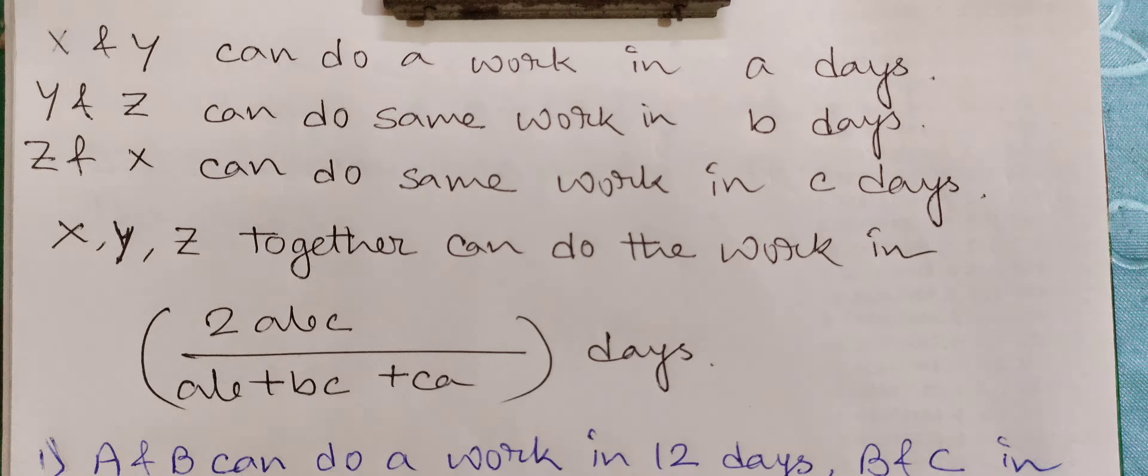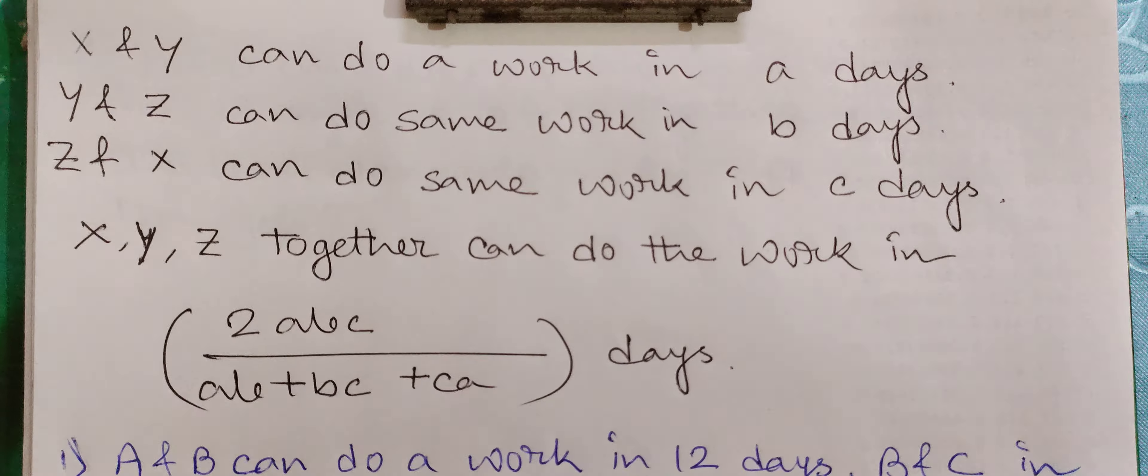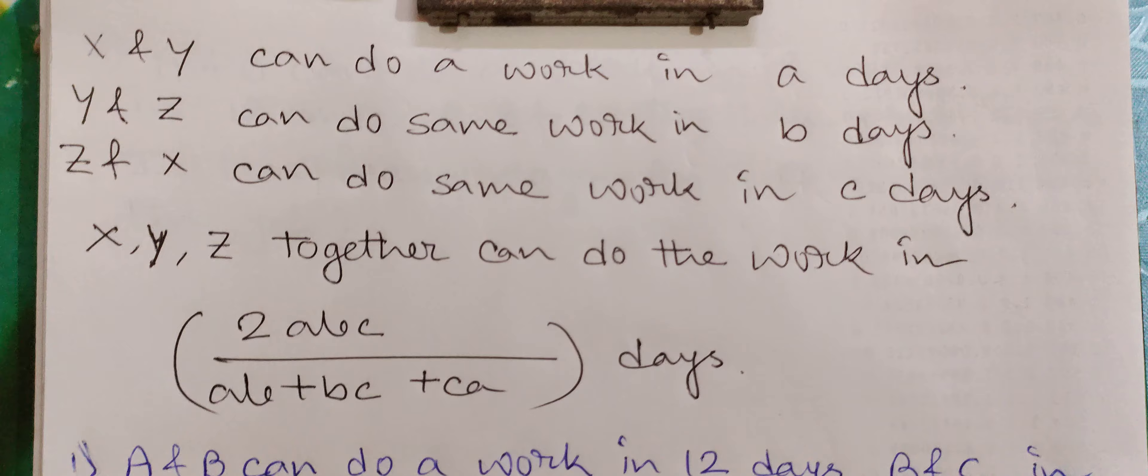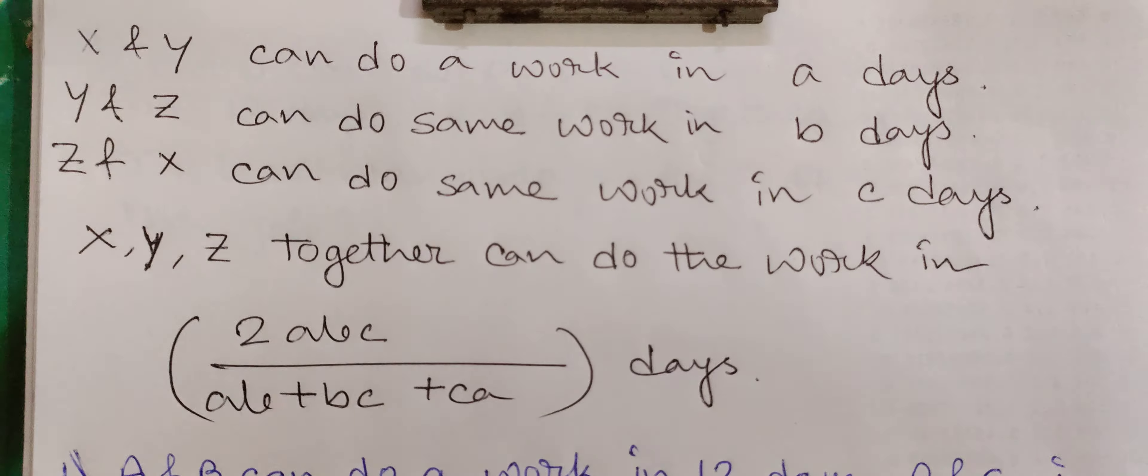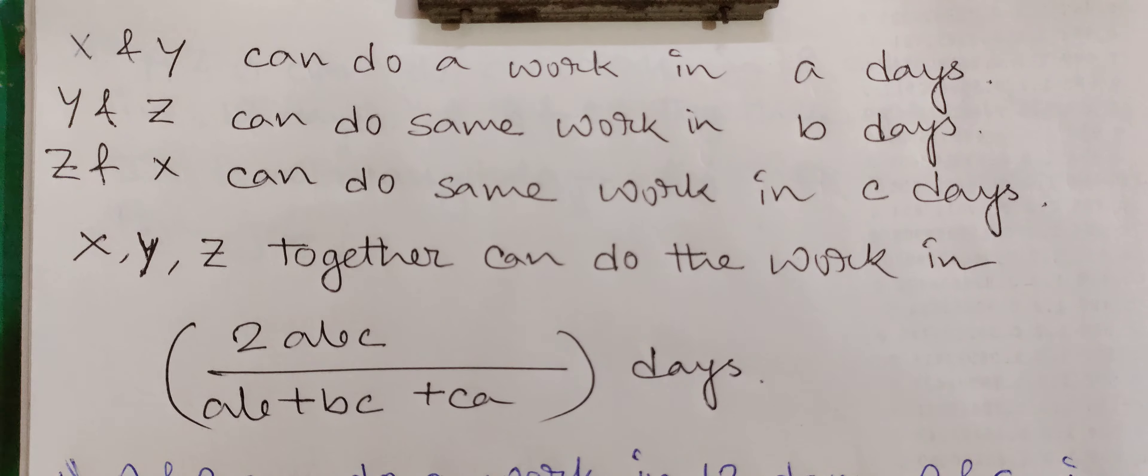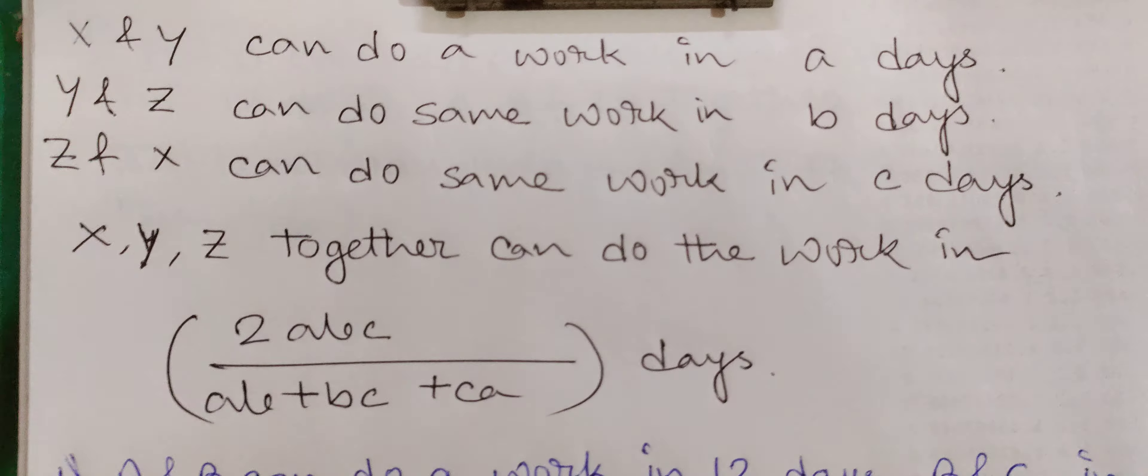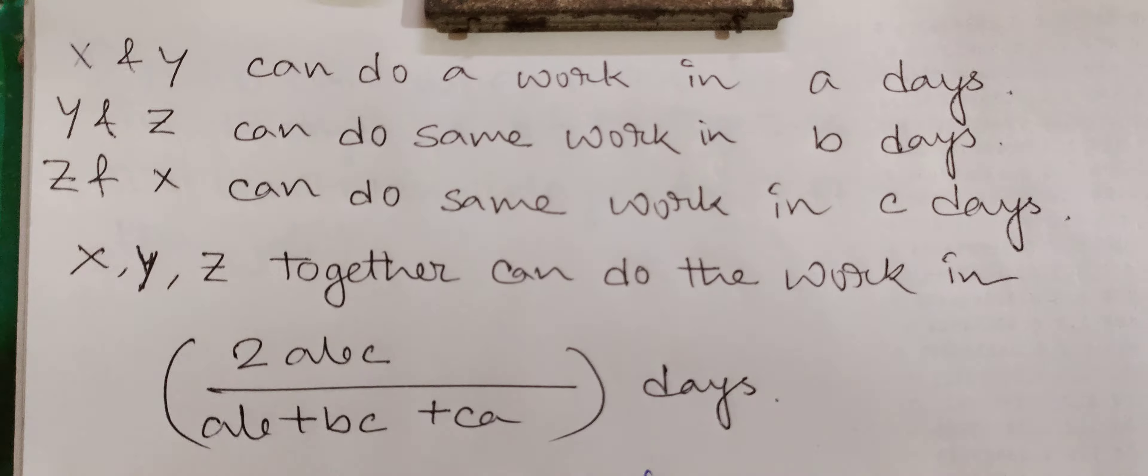We've seen this kind of problem where two people can complete a work. Let's say A and B can complete a work in some days, B and C can complete in some days, and C and A can complete in another amount of days. So if all three work together, how many days will they take to complete? This kind of problem can be solved by this shortcut method.